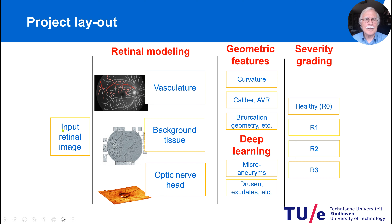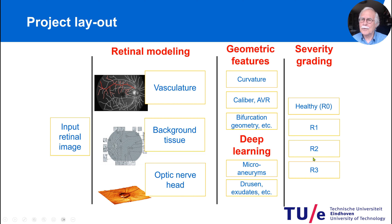So this is the layout. We start with a retinal input image, measure all kinds of properties from the vasculature, the background tissue, and the optic nerve head, then quantify them in specific computer vision programs to find the statistics of bifurcations, etc. Finally, we did deep learning. The severity grading we decided to do in four grades: Healthy, R1, R2, and R3 — where R3 is the most serious, with irreversible damage to the retina.